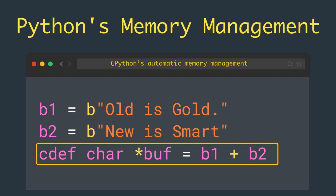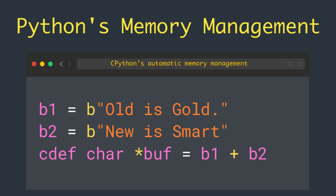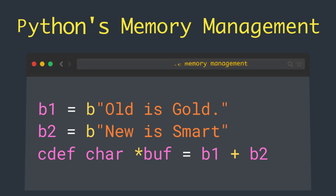Because the result of the addition is a temporary object, this example cannot work. The temporary result of the addition is deleted immediately after it is created, so the character buffer cannot refer to a valid Python object.